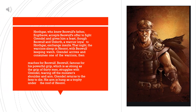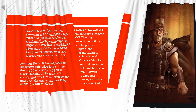Hrothgar, who knew Beowulf's father, accepts Beowulf's offer to fight Grendel and gives him a feast, though Beowulf and Anfert, a warrior loyal to Hrothgar, exchange insults. That night, the warriors sleep in Hrothgar's hall with Beowulf keeping watch. Grendel arrives and consumes one of the warriors, then reaches for Beowulf. Beowulf, famous for his powerful grip — as strong as the grip of thirty men — struggles with Grendel, tearing up the monster's shoulder and arm. Grendel returns to the fen to die, and his arm is hung as a trophy under the roof of Hrothgar.